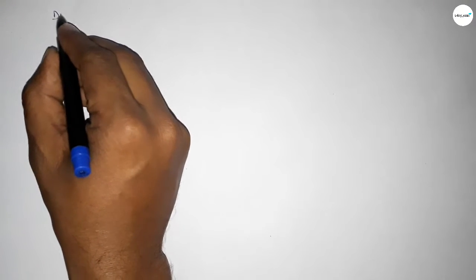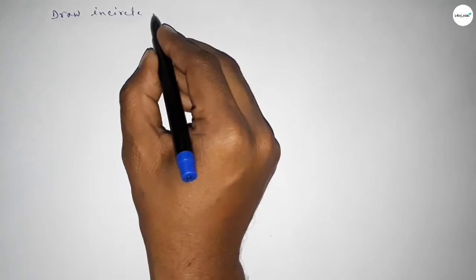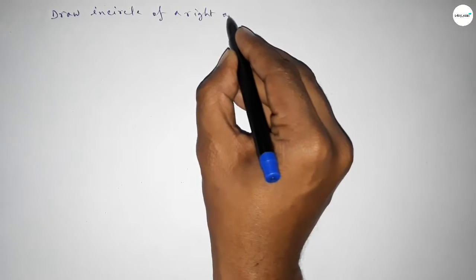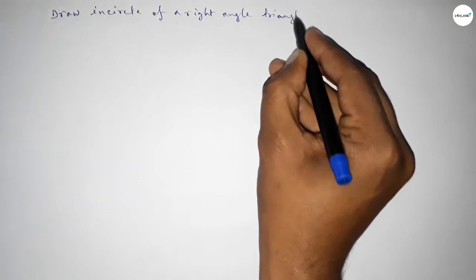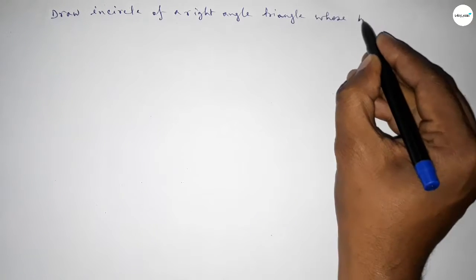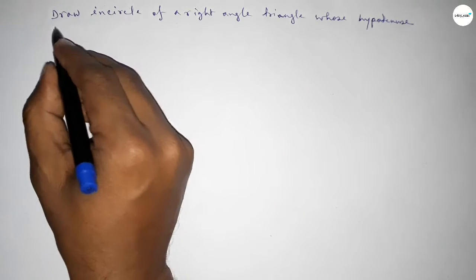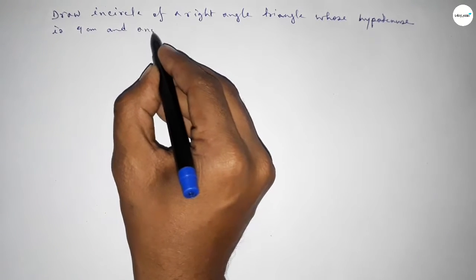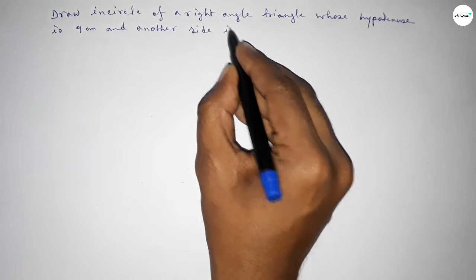Hi everyone, welcome to Essay Share Classes. Today in this video we have to draw the incircle of a right-angle triangle whose hypotenuse is given as 9 centimeters and another side is 6.5 centimeters. So we are constructing the incircle of a right-angle triangle.